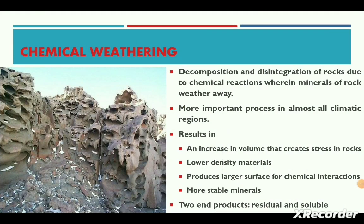Now let's move into chemical weathering. The decomposition and disintegration of rocks due to chemical action can be termed as chemical weathering. Chemical weathering is considered more important than mechanical weathering in almost all climatic regions. It results in an increase in volume that produces stress within the rock, lower density of materials, particles of smaller size that provide a larger surface for chemical interaction, and a more stable mineral. The two major end products of chemical decomposition are residual products such as clay, and soluble products such as calcium bicarbonate which can be removed by solution.